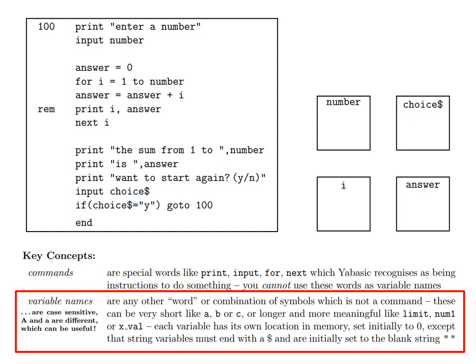Then there are variable names. These are any other word or combination of symbols which is not a command. These can be very short like A, B, or C, or longer and more meaningful like limit, num1, or xval.